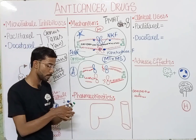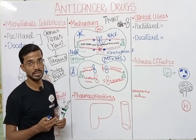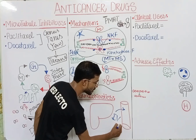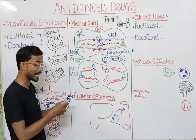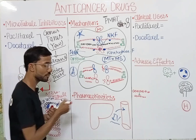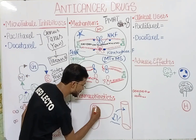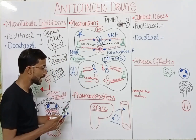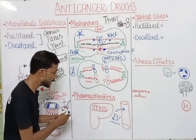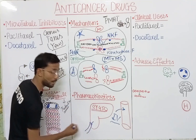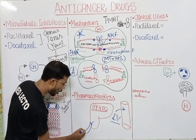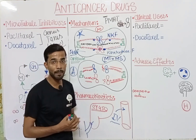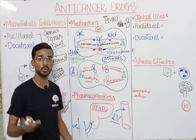Regarding pharmacokinetics of paclitaxel and docetaxel — the taxane family — these drugs are administered intravenously (IV). Metabolism occurs in the liver through cytochrome P450 enzymes. The metabolites are then excreted through bile into the duodenum via the bile duct, and ultimately excreted through the feces.